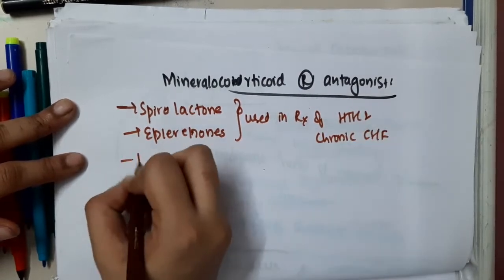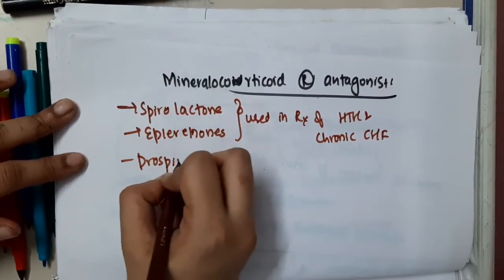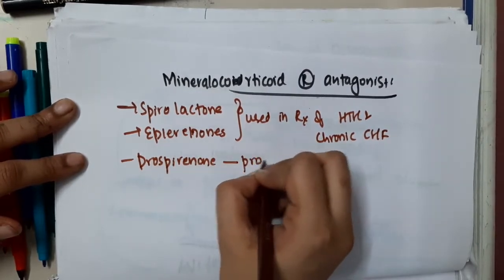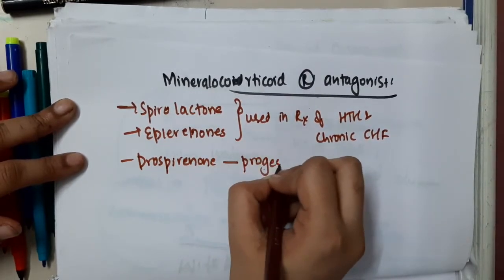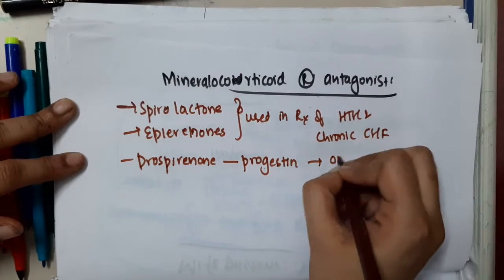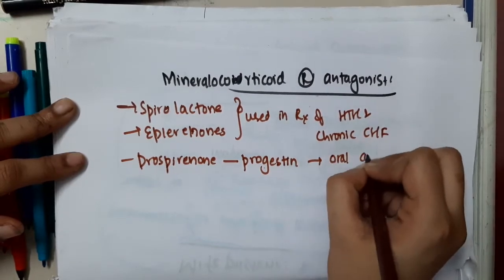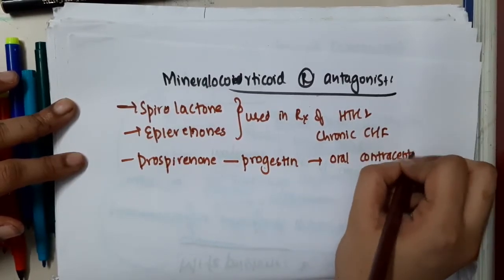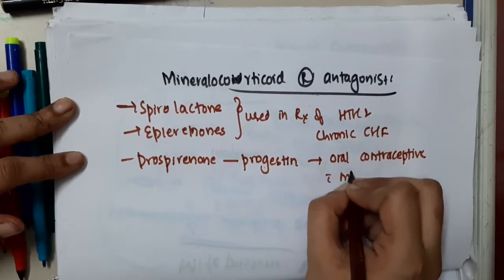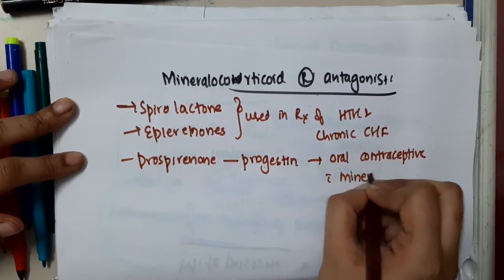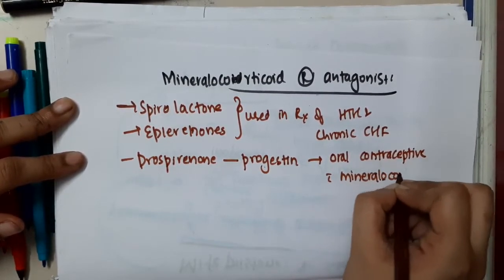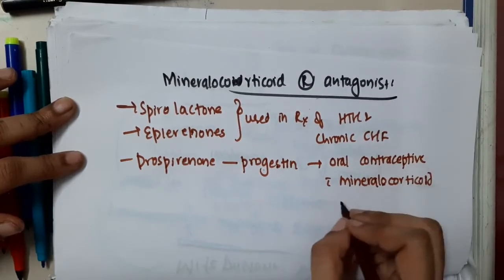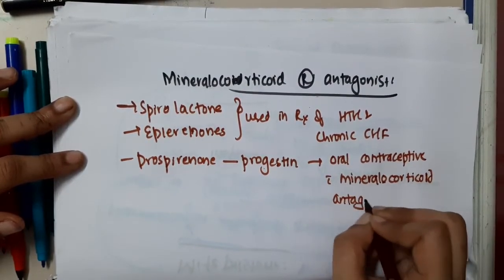One more we have drospirenone. Drospirenone is actually a progestin, and it is used as an oral contraceptive with mineralocorticoid antagonistic action.